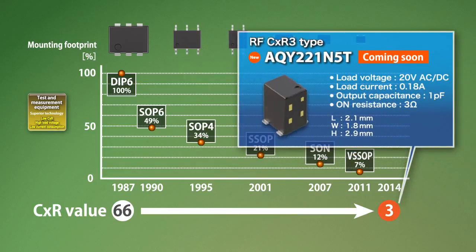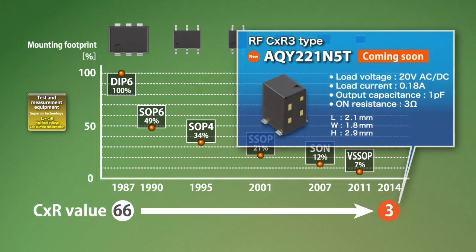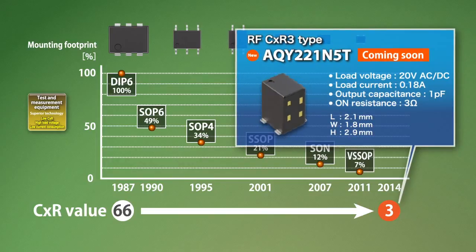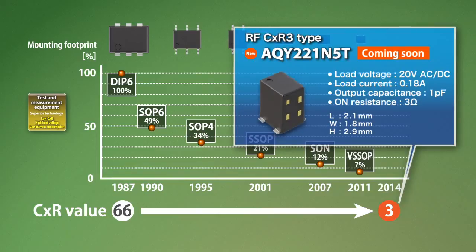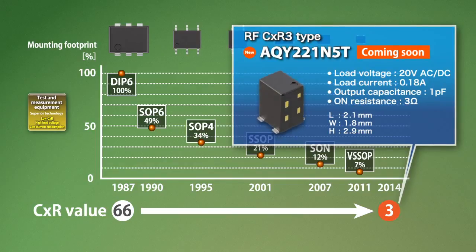In our new R×C=3 product, multiplying C (the capacitance between the output terminals) with R (the on resistance) yields a value of 3. And we have also succeeded in providing this in an ultra-small VSSOP package. This product is especially suitable for the test and measurement equipment market, where high density mounting is essential.